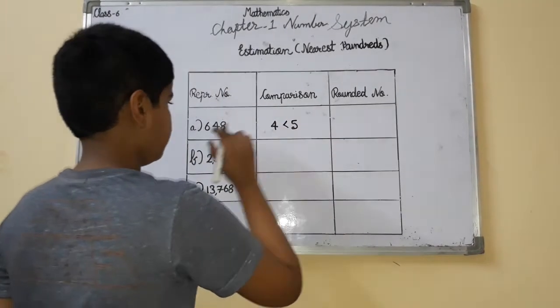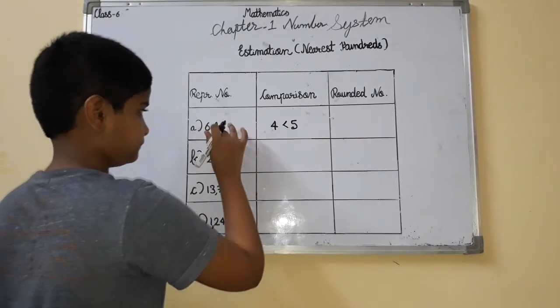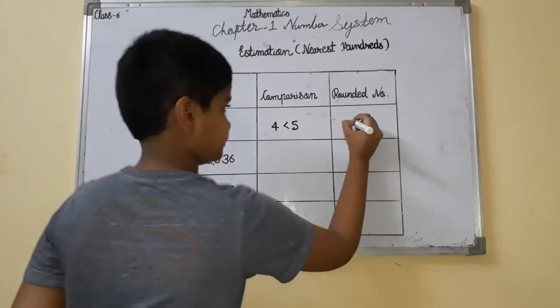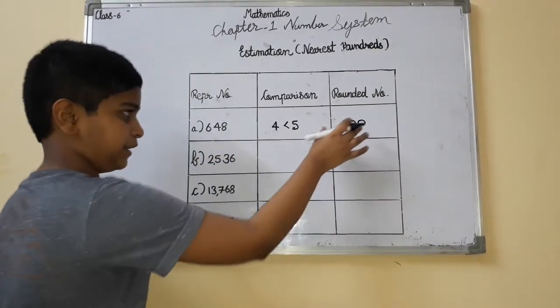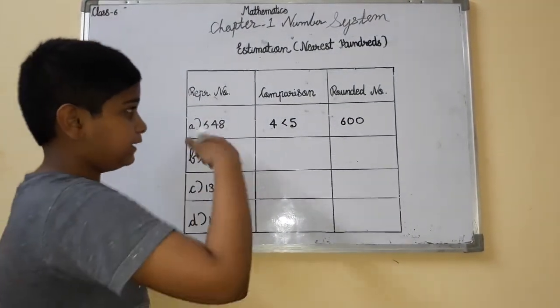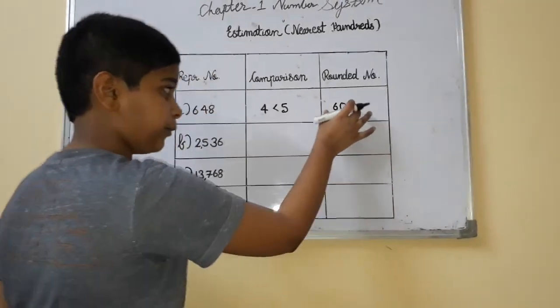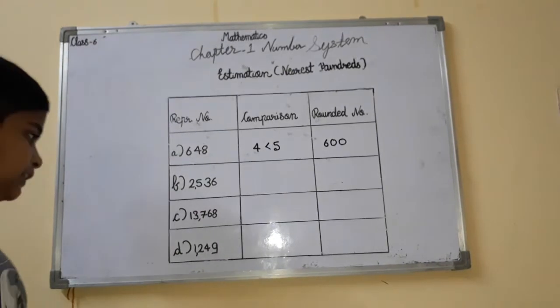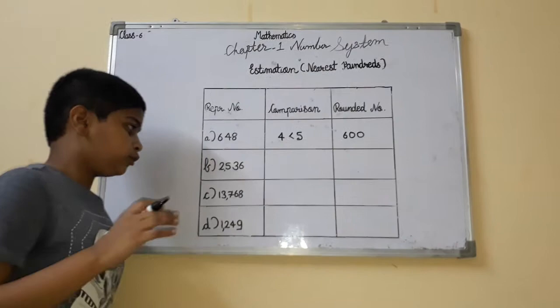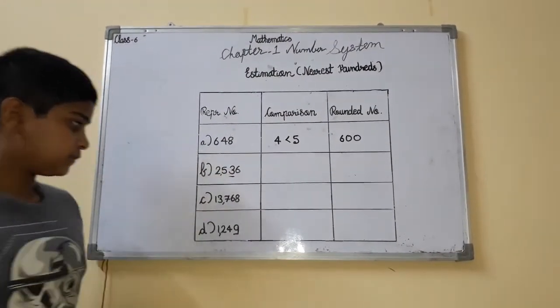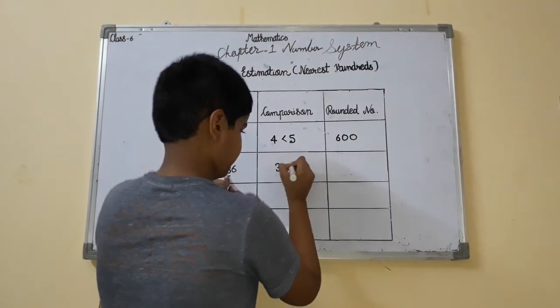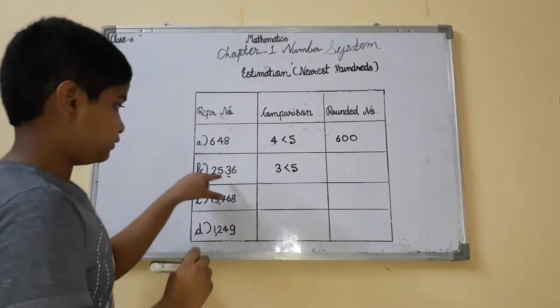Since 4 is less than 5, this will stay as 6 in the hundreds place. Less than 5 means we put 0 and 0 for the remaining places. This is the rounded number, the estimated number which we have rounded to the nearest hundreds. 648 to the nearest hundreds is 600.